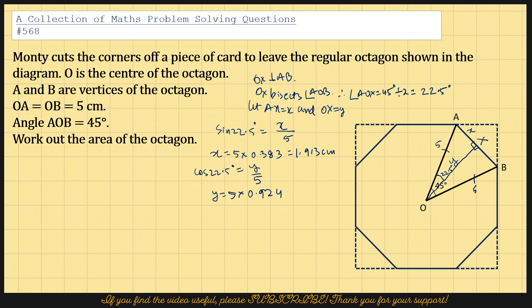So if I multiply it with 5, I would get 0.924 multiplied by 5, and that's 4.62. So I'm going to get 4.62 centimeters.